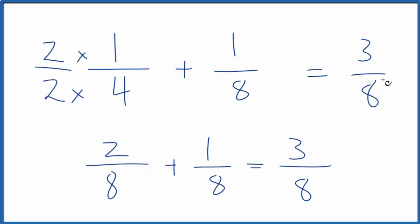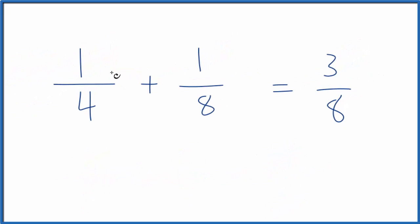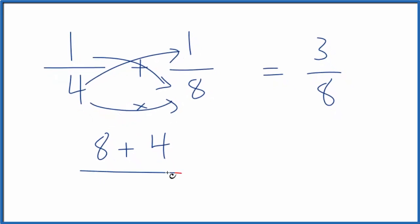Here's a quick way you can check your work. We could take 1 times 8. That would give us 8. And 4 times 1. That would give us 4. And then we multiply the bottom. 4 times 8 is 32.